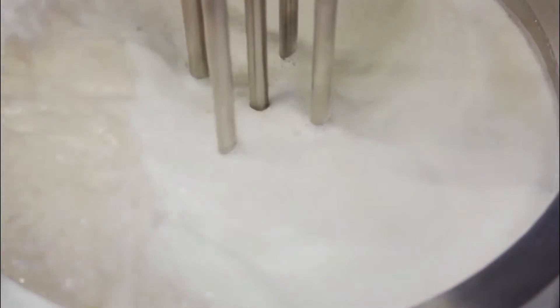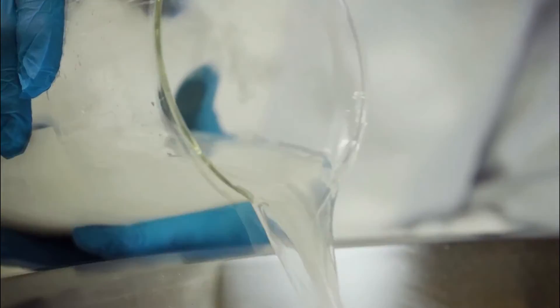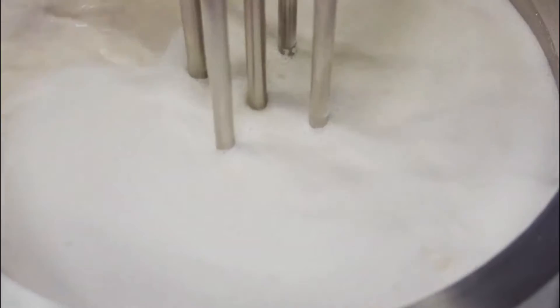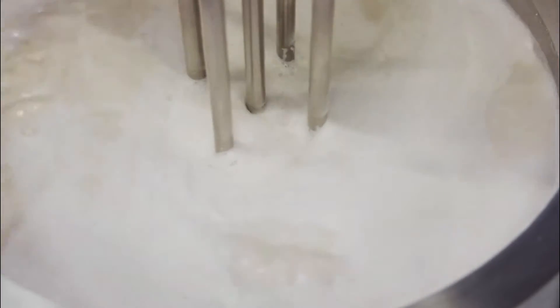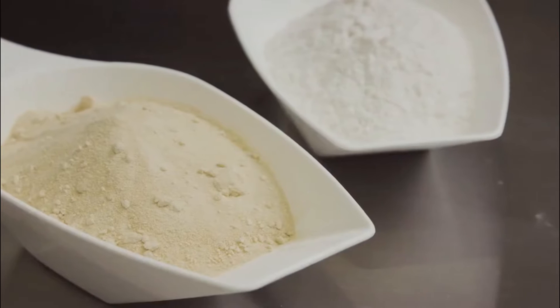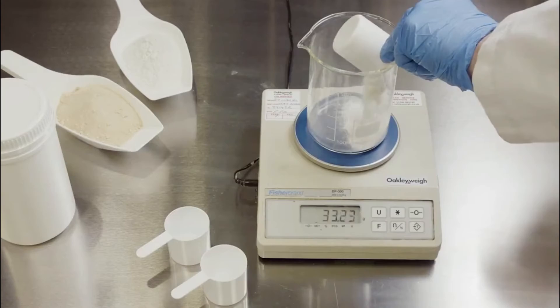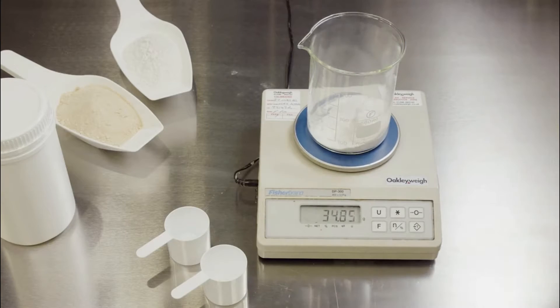The journey commences with a meticulous sorting process, where seasoned experts meticulously sift through the oats, handpicking only the choicest grains for further processing. Each oat is scrutinized for size, color, and texture, ensuring that only the finest specimens find their way into the sacred art of oat milk crafting.